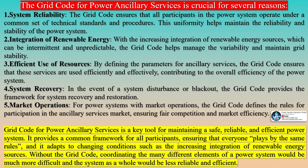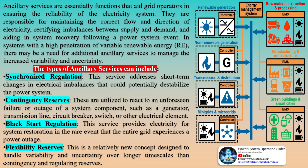For efficient use of resources, by defining the parameters for ancillary services, the grid code ensures that these services are used efficiently and effectively, contributing to the overall efficiency of the power system. For system recovery, in the event of a system disturbance or blackout, the grid code provides the framework for system recovery and restoration. For market operations, the grid code defines the rules for participation in the ancillary services market, ensuring fair competition and market efficiency.